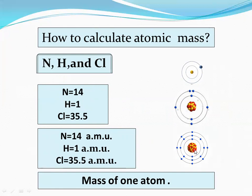Chlorine is present in two forms — chlorine-37 and chlorine-35 — and both are isotopes of chlorine. Chlorine-35 has 17 protons and 18 neutrons. Adding them gives the average atomic mass of 35.5 AMU for chlorine. So nitrogen atomic mass is 14 AMU, hydrogen atomic mass is 1 AMU, and chlorine atomic mass is 35.5 AMU. Atomic mass means the mass of one atom.